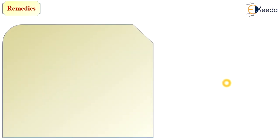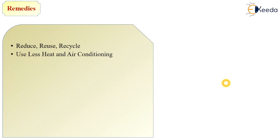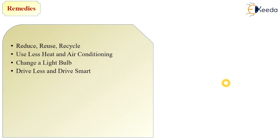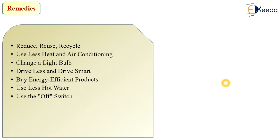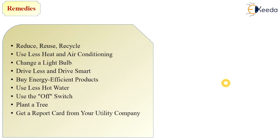What are the remedies to reduce or nullify the effect of global warming? The first principle of environmental management is reduce, reuse, and recycle. Next, use less heat and air conditioning, as most greenhouse gases are emitted from these appliances. Change light bulbs to low energy consumption bulbs. Drive less and drive smart. Buy energy-efficient products. Use less hot water, use the off switch, plant trees, and encourage others to conserve.